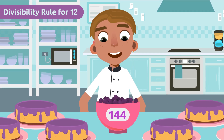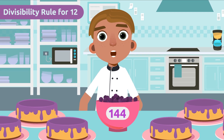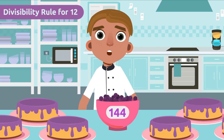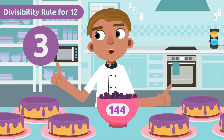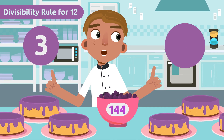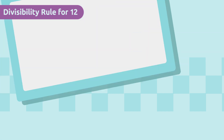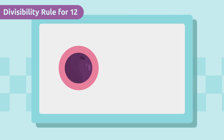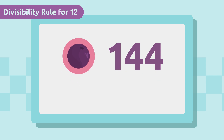The easiest way to know if a number is divisible by 12 is to check if it is divisible by three and also by four. First, let's apply the divisibility rule of three as we did before — let's add the digits.